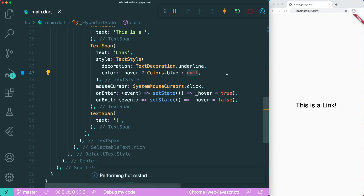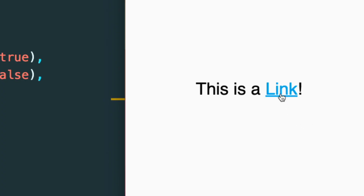Now let's save this. What passing null into the color parameter does is set its default color, which is black. If we hover over the link, you can see the current color is blue. And if we exit the space of the TextSpan, it returns to the default color, which is black.